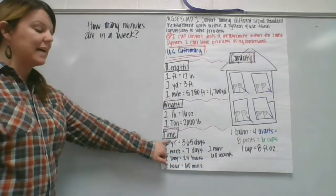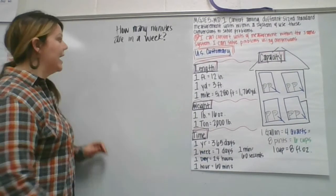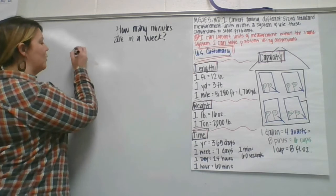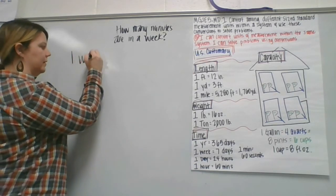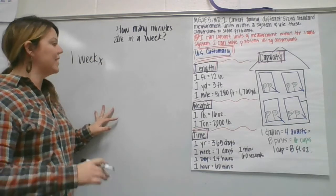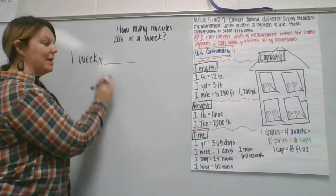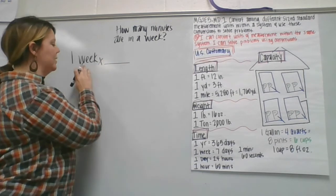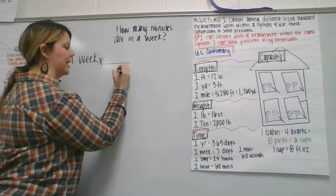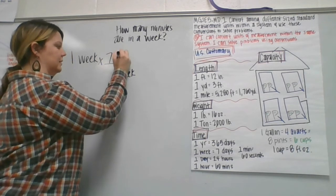So we can use our conversions to find this answer. If I'm starting with a week, I'm going to write that down. One week. And then I'm going to multiply it using ratios. So within a week, whatever I get rid of or want to get rid of, I'm going to put on the bottom. So one week. I want to get rid of weeks, so I'm putting that on the bottom, is equal to seven days.